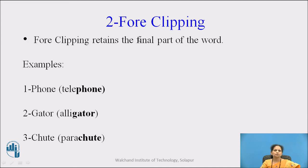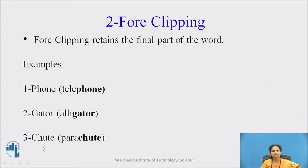The next type is fore clipping. Fore clipping retains the final part of the word. Examples: 'phone' is clipped from 'telephone'; 'gator' is a clipped form of 'alligator'; 'chute' is derived from 'parachute'. In all these three words, you can see that the first part is deleted and the second part is retained as it is. These are the short forms of the original words.